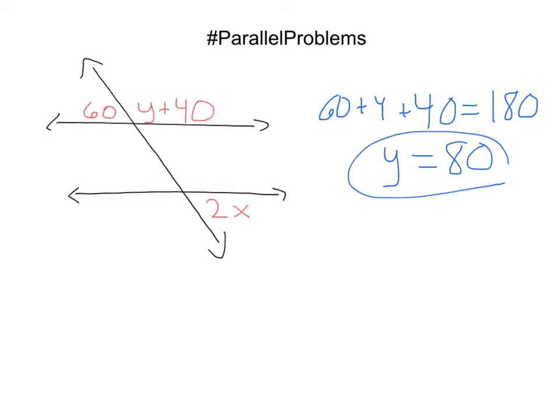All right, next, let's see what else we got. Well, I've got this 60 and this 2x. These are alternate exterior. I know alternate exterior angles are congruent. So since they're congruent, they have to be equal to each other. I'm going to say 60 equals 2x. Solving for there, I'll get x equals 30.